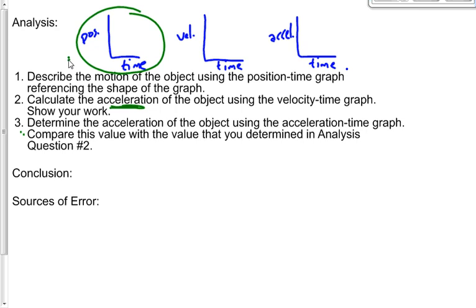And then finally, number three says determine the acceleration of the object using the acceleration time graph, and then compare this value to the value that you determined in analysis question number two. I'm not going to tell you how to do this one. I'll give you a hint, though. It's easy. It's easier than question number two. You want to find the acceleration on an acceleration time graph, and it's a uniform acceleration. It's easier than question number two. So, get that value, compare it with the acceleration of number two.